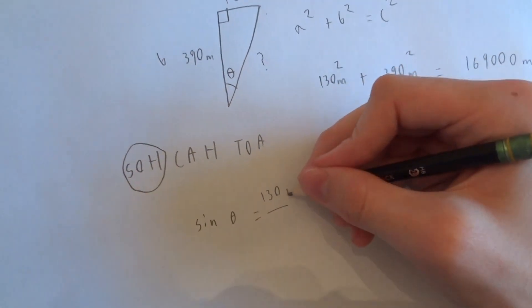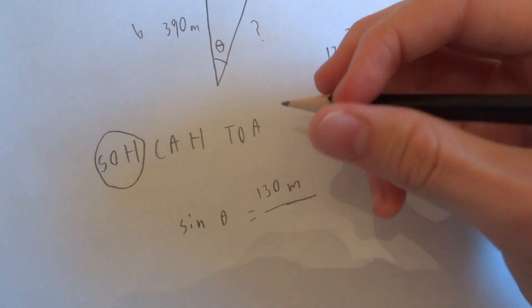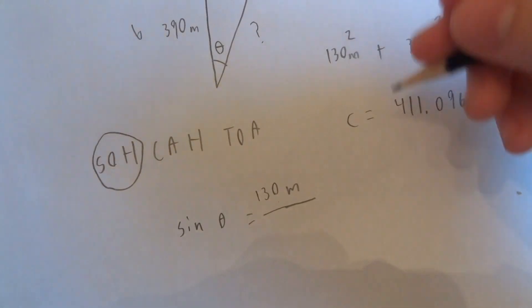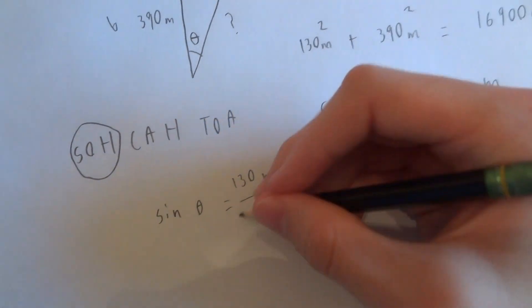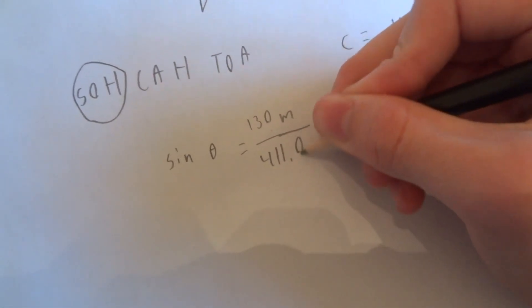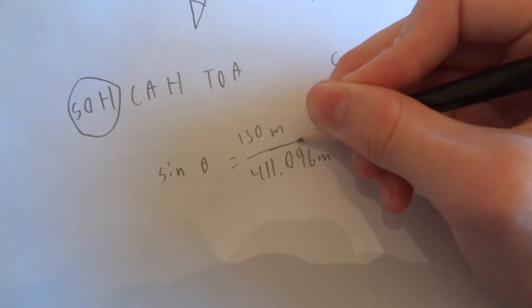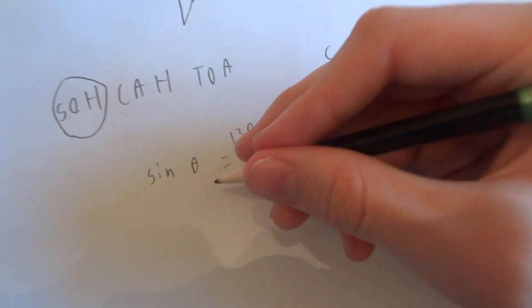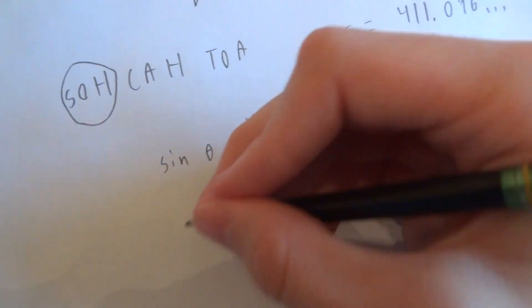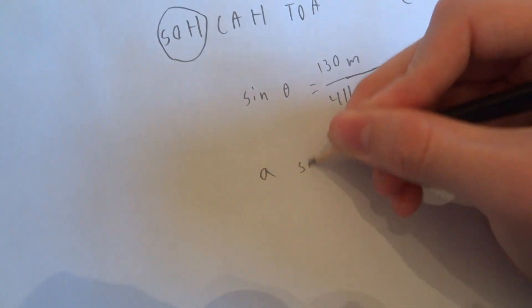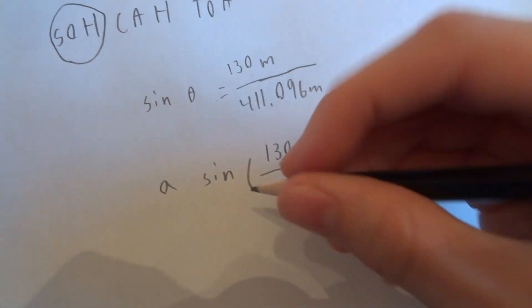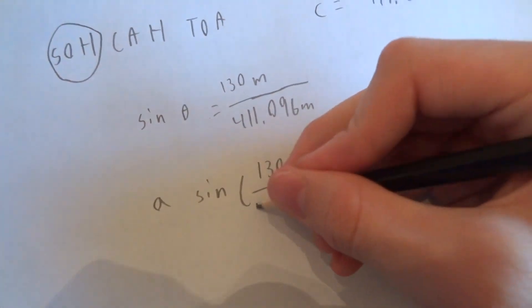And so sine theta is equal to the opposite side, which is 130 meters, divided by the hypotenuse, which is C, which is this number. So we can use arc sine of 130 meters over this function.